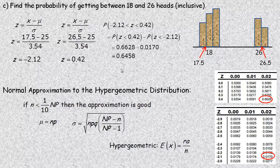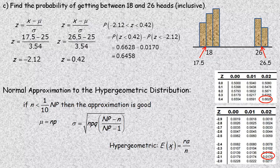That's the end of the binomial approximation. Now we'll talk about the hypergeometric. The normal approximation test for the hypergeometric is quite different: if the sample size n is less than one-tenth of the population N, the approximation is good — there's only one part to the test, unlike the binomial's two parts. The mean and standard deviation formulas are also presented, similar to the expected value formula for the hypergeometric.